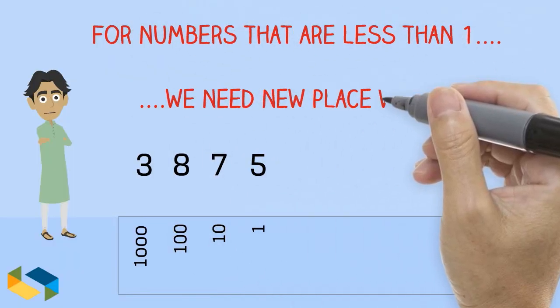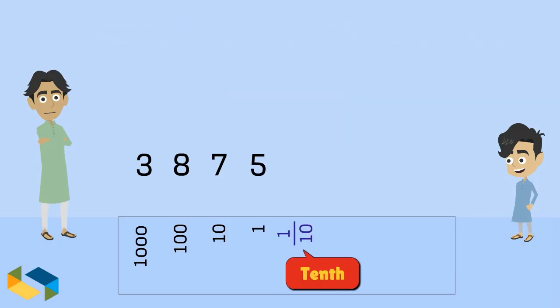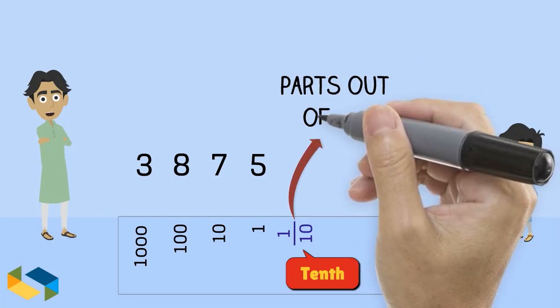So coming back to where we were, for anything less than 1, we have to create new place values. For instance, we have the place value 1 tenth, for any number that represents parts out of 10.